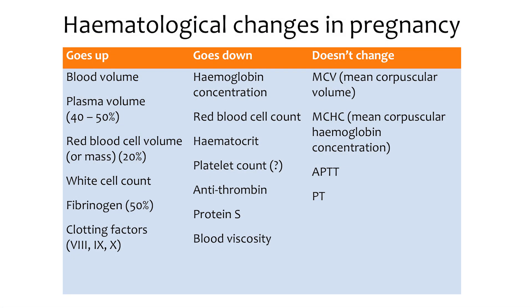Let me explain some of these changes. Blood volume goes up in pregnancy, and this increase involves a rise in plasma volume as well as in red cell and white cell volumes. However, while the plasma volume increases by about 40 to 50%, the red cell volume increases by only 15 to 20%, which is why we get physiological haemodilution or physiological anaemia of pregnancy. This explains the fall in red blood cell count, haemoglobin concentration, haematocrit, and blood viscosity.